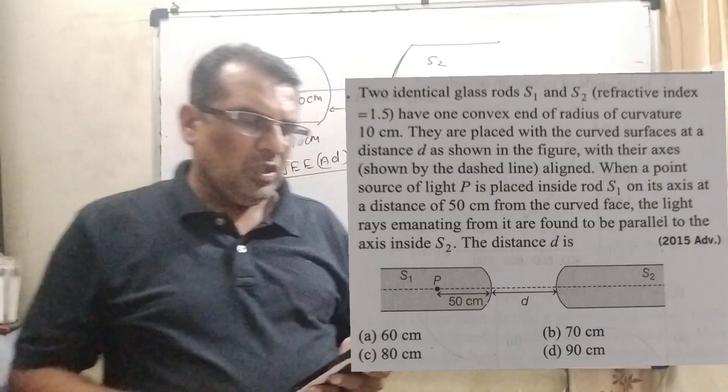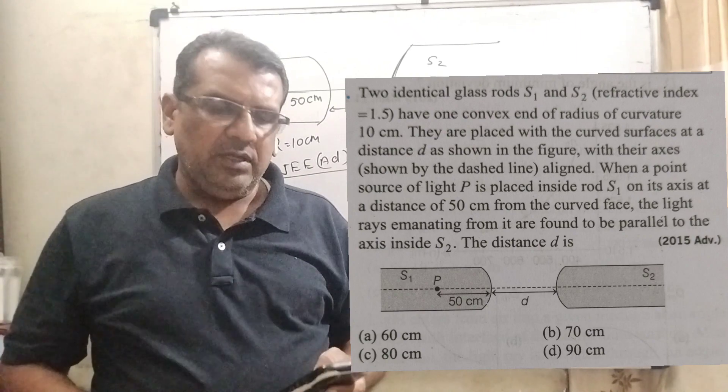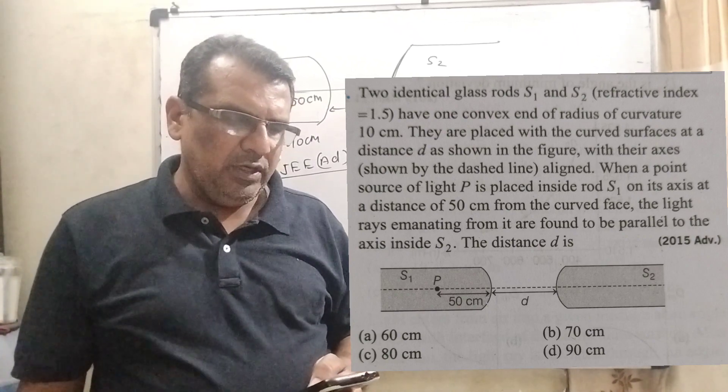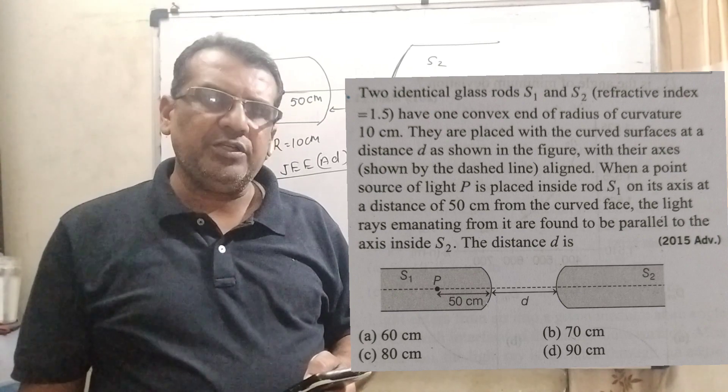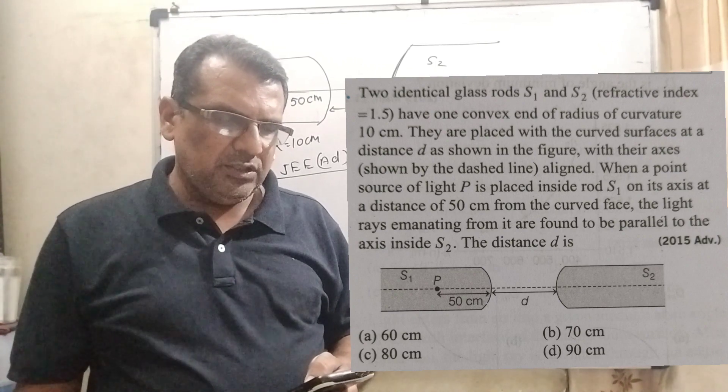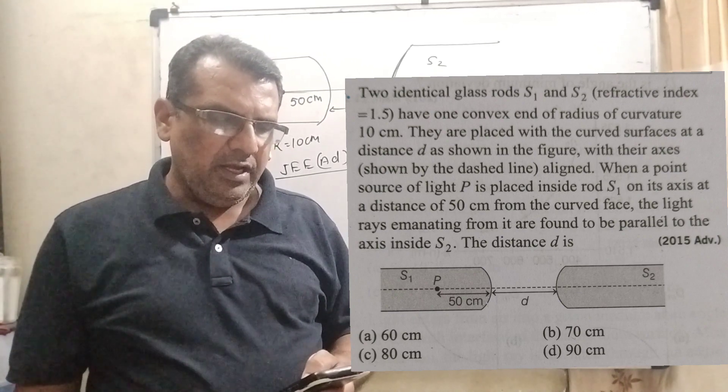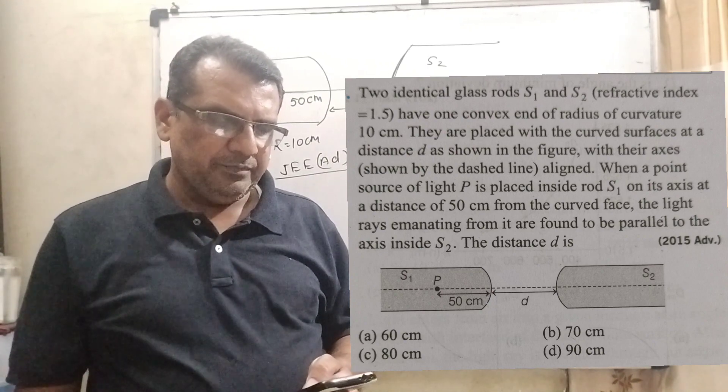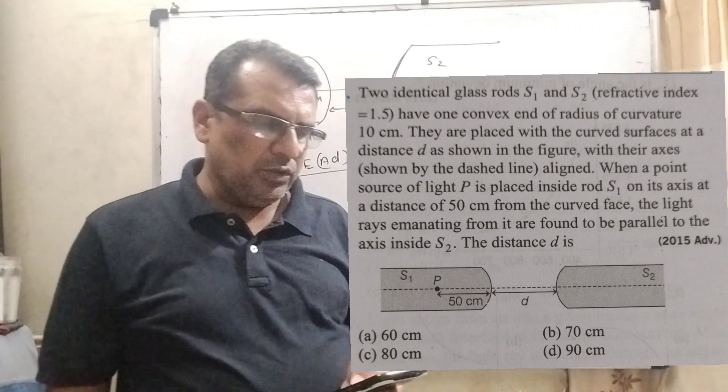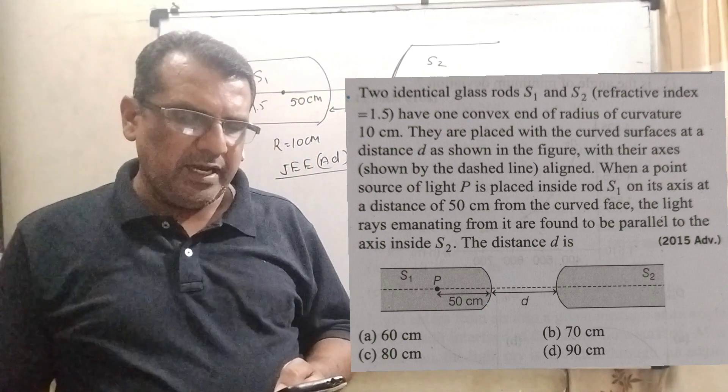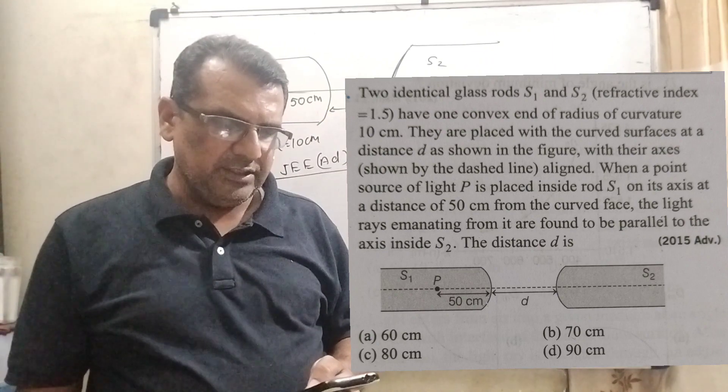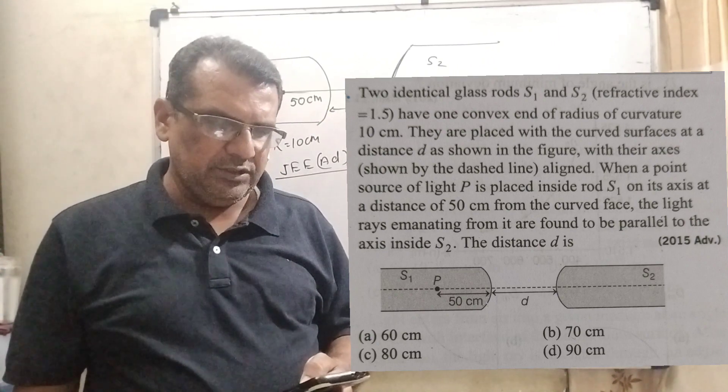Now here is the question. Two identical glass rods S1 and S2, refractive index equal to 1.5, have one convex end of radius of curvature 10 cm. They are placed with the curved surfaces at a distance d as shown in the figure with their axes aligned. When a point source of light P is placed inside rod S1 on its axis at a distance of 50 cm from the curved surface.